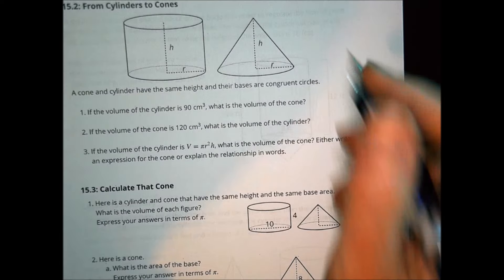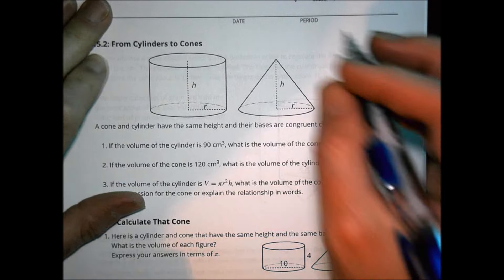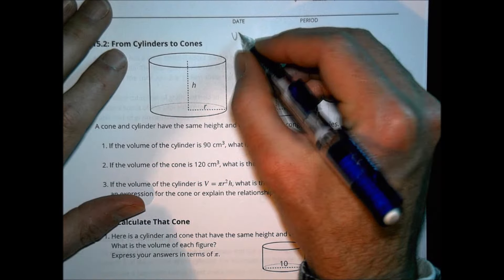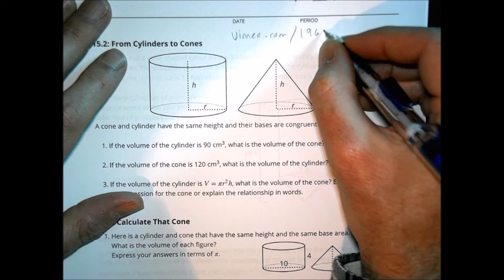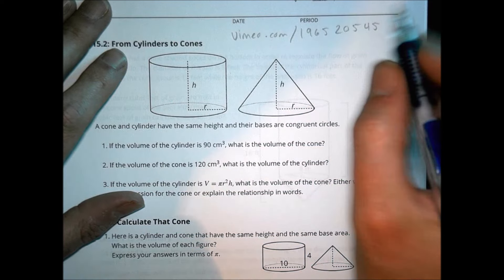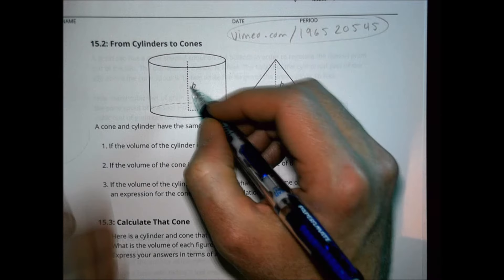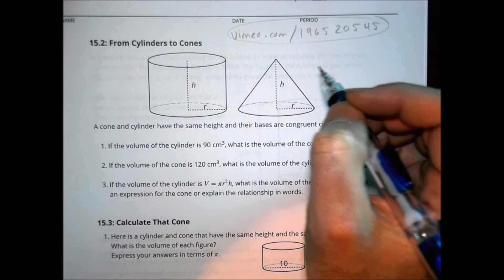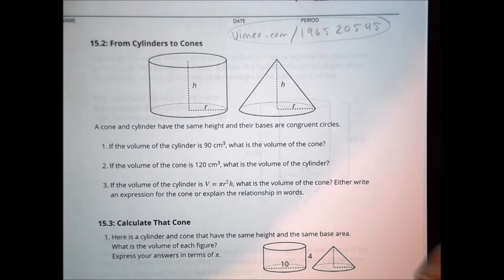If you want to label it, you label it with a radius in the base and the height going up there. You can make that either going up or down, up to you. From cylinders to cones. Hopefully in class, your teacher took you on a little journey to watch one of these cones and to see how they were similar. If they didn't, you could check out a little video on vimeo.com/196520545. You can watch a nice little video that shows you the difference between a cone and a cylinder's volume and how that works out.